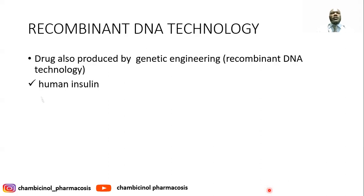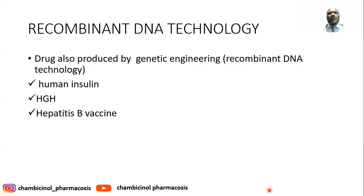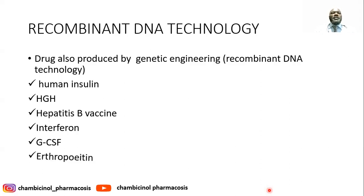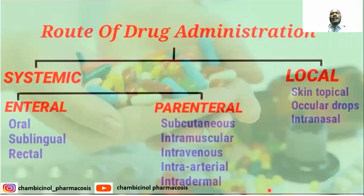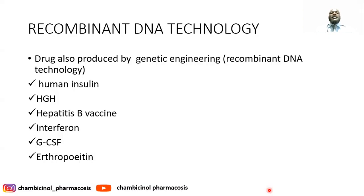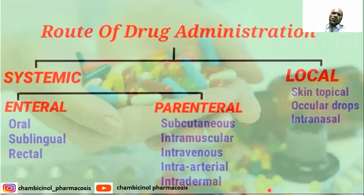Many drugs can be synthesized or manufactured by recombinant DNA technology, including human insulin, human growth hormones, hepatitis B vaccine, interferons, G-CSF (granulocyte colony-stimulating factor), and erythropoietin.